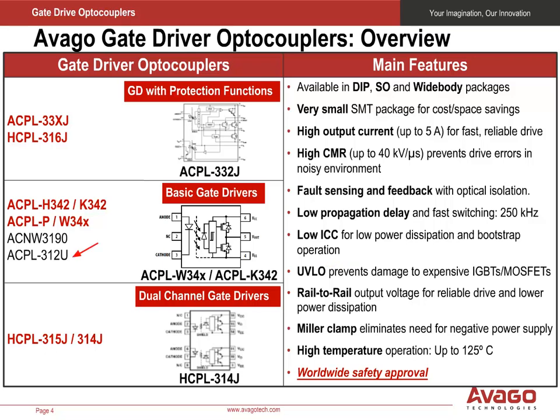Our HCPL-312U, an automotive-grade gate driver, operates up to 125 degrees C. Finally, two important key points are that all our optically isolated gate drivers have a very high common mode rejection ratio and are approved under all worldwide safety standards.